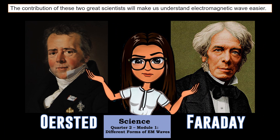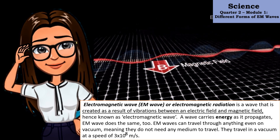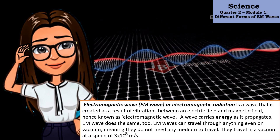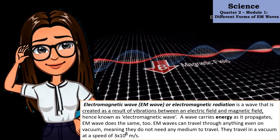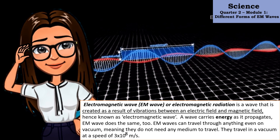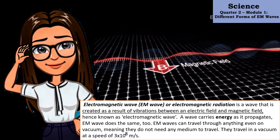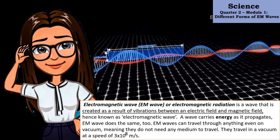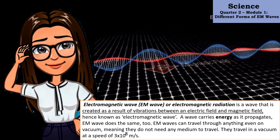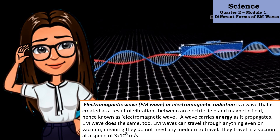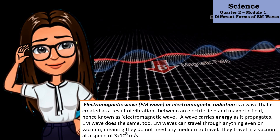The contributions of these two great scientists will help us understand electromagnetic waves as we tackle this topic deeper in our future lessons. An electromagnetic wave is a wave created as a result of vibrations between an electric field and magnetic field. A wave carries energy as it propagates, thus electromagnetic waves also carry energy. EM waves can travel through anything, even a vacuum, meaning they do not need any medium to travel. They travel in a vacuum at a speed of 300 million meters per second.